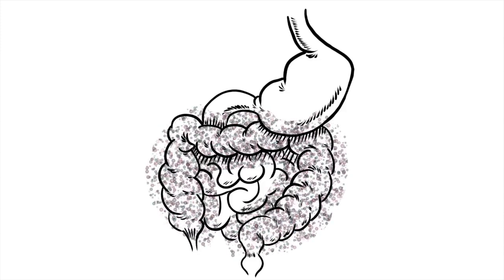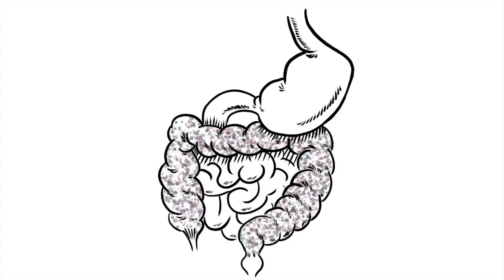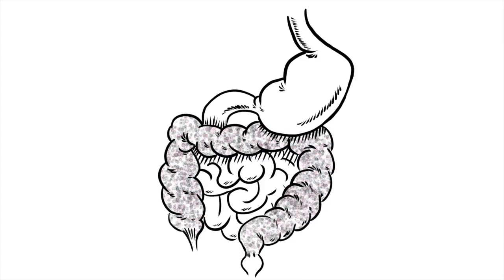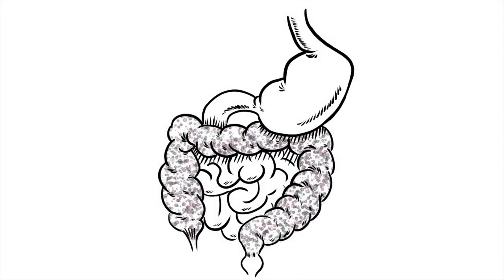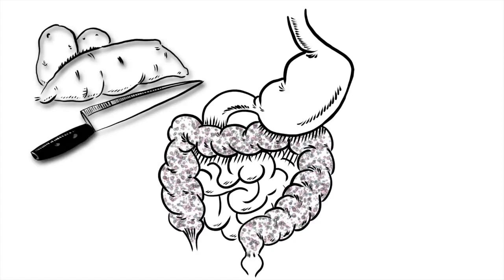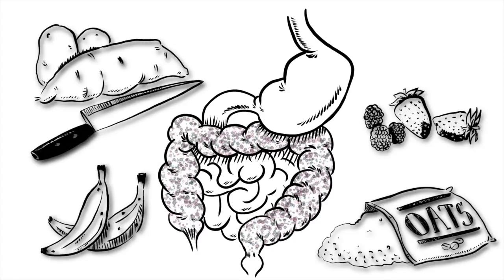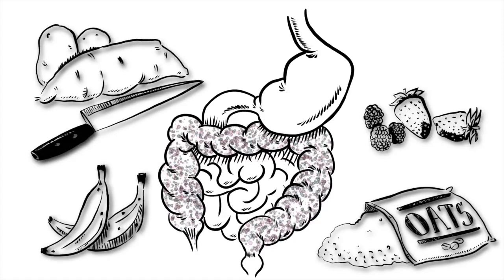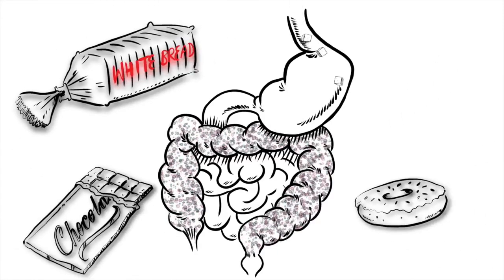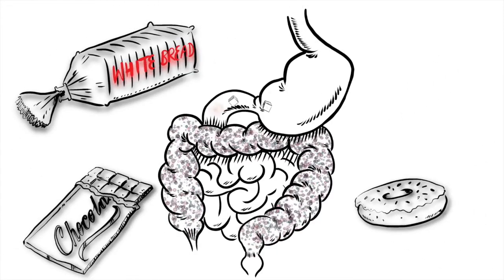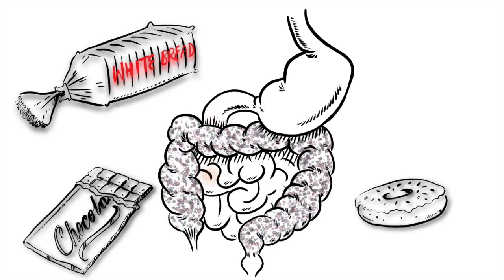Since most microbes are in our colon or large intestine, what we eat feeds our microbiota. And what a healthy microbiota needs are fiber-rich, complex carbohydrates. Simple sugars, found in refined carbohydrates, tend to be absorbed quickly and don't reach the colon for the microorganisms to feast on.